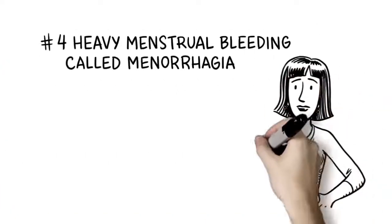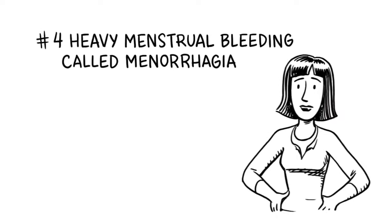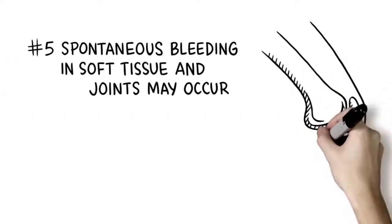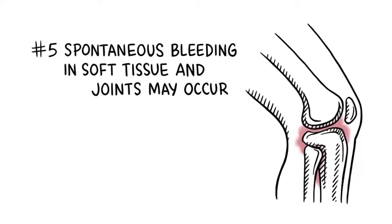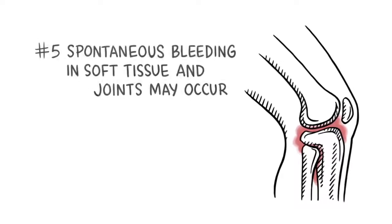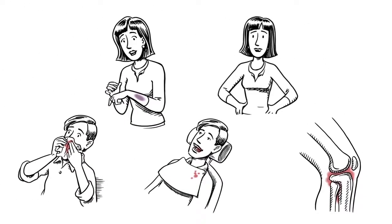Women may experience heavy menstrual bleeding called menorrhagia. In more severe cases, spontaneous bleeding in soft tissue and joints may occur. Individuals with VWD may experience some or all of these symptoms with varying severity.